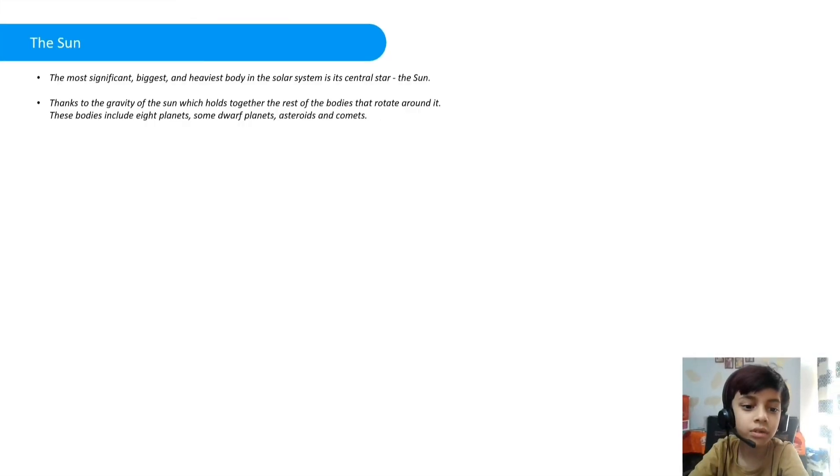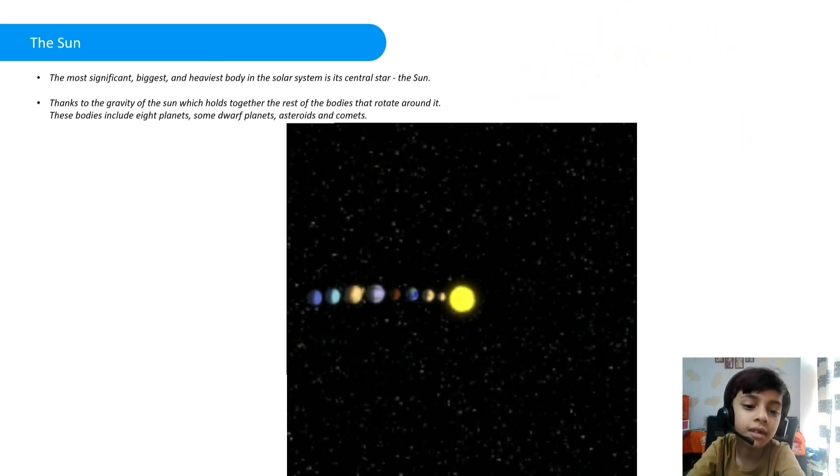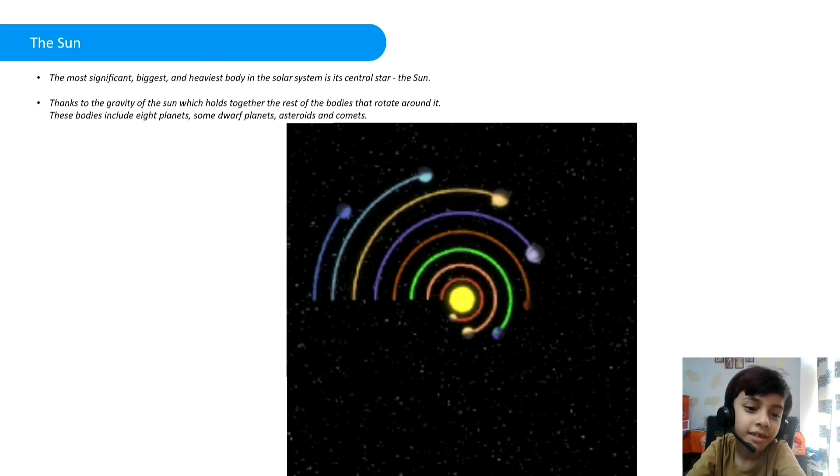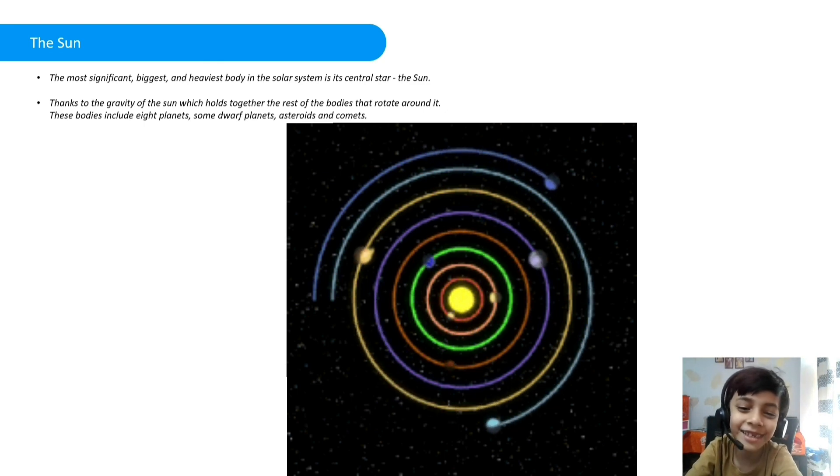The most important, biggest and heaviest body in the solar system is its central star, the sun. Thanks to the gravity of the sun, which holds together the rest of the bodies that rotate around it. These bodies include 8 planets, dwarf planets, asteroids and comets.